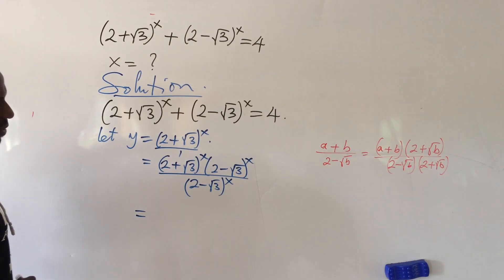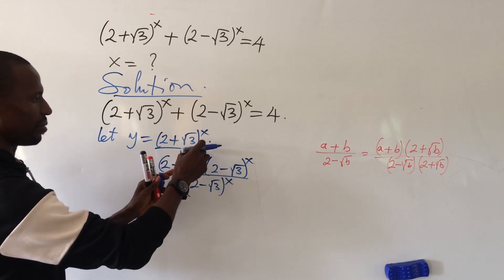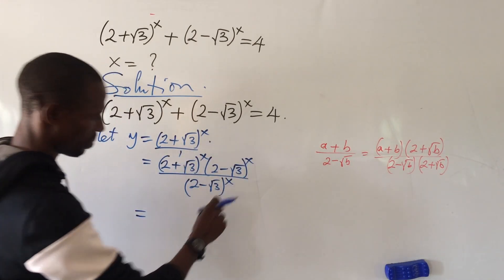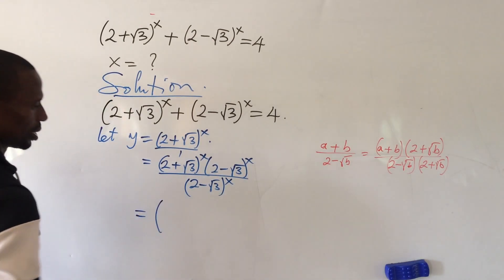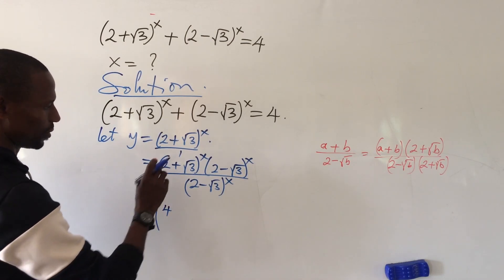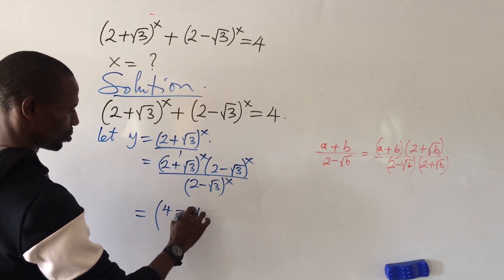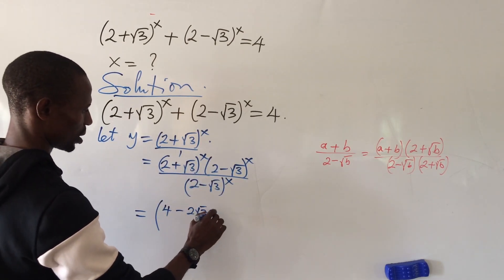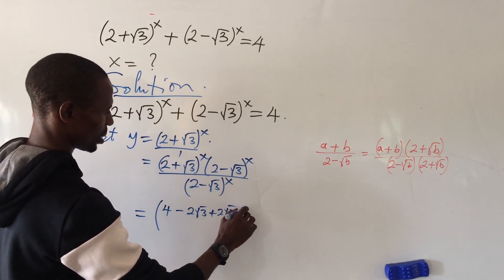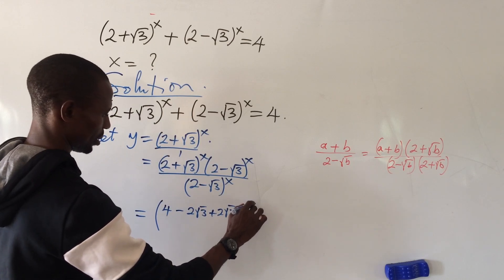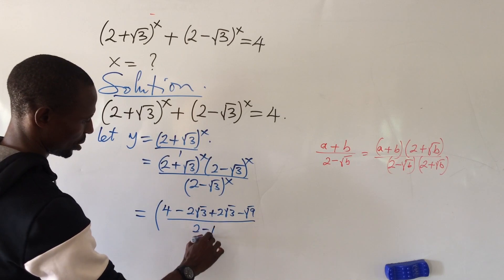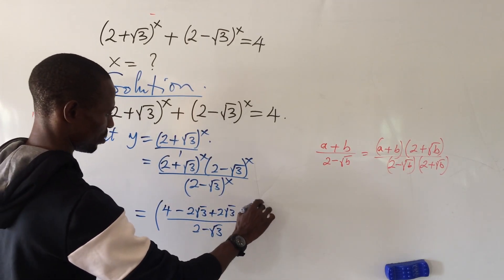If we open up this bracket, we can rewrite this all to the power of x, since each factor is raised to the power of x. Opening it up gives us: 4 minus 2√3 plus 2√3 minus √9, all over (2 - √3), all to the power of x.